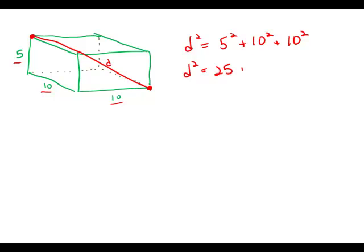25 plus 100 plus 100, d squared equals 225. And as it happens, that's a perfect square. So d equals 15, and this is answer choice A.